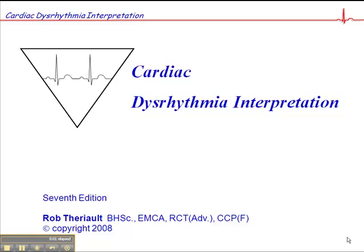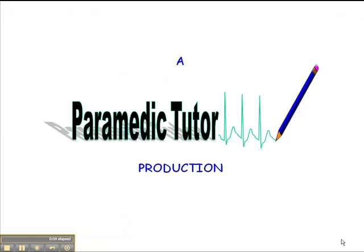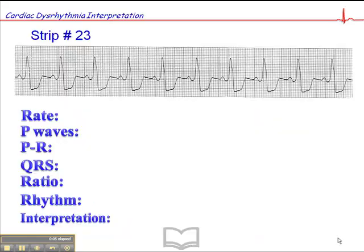This is exercise number 23 on page 96 of your cardiac dysrhythmia interpretation workbook. Let's start with the heart rate here, which is approximately 84.